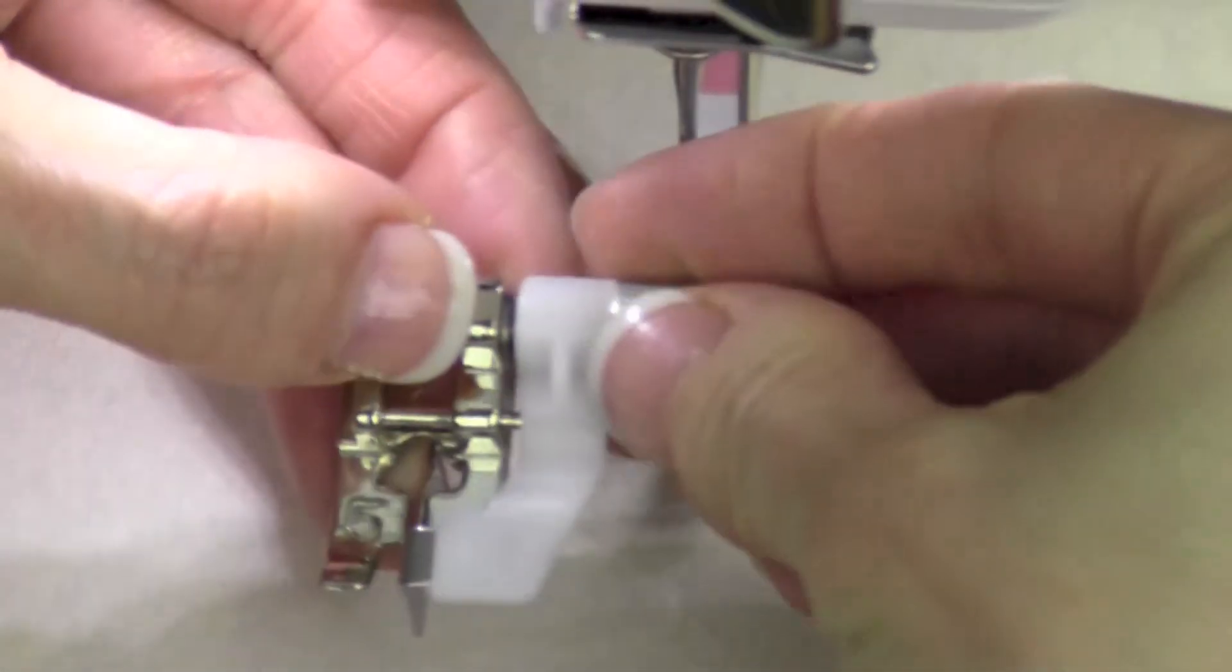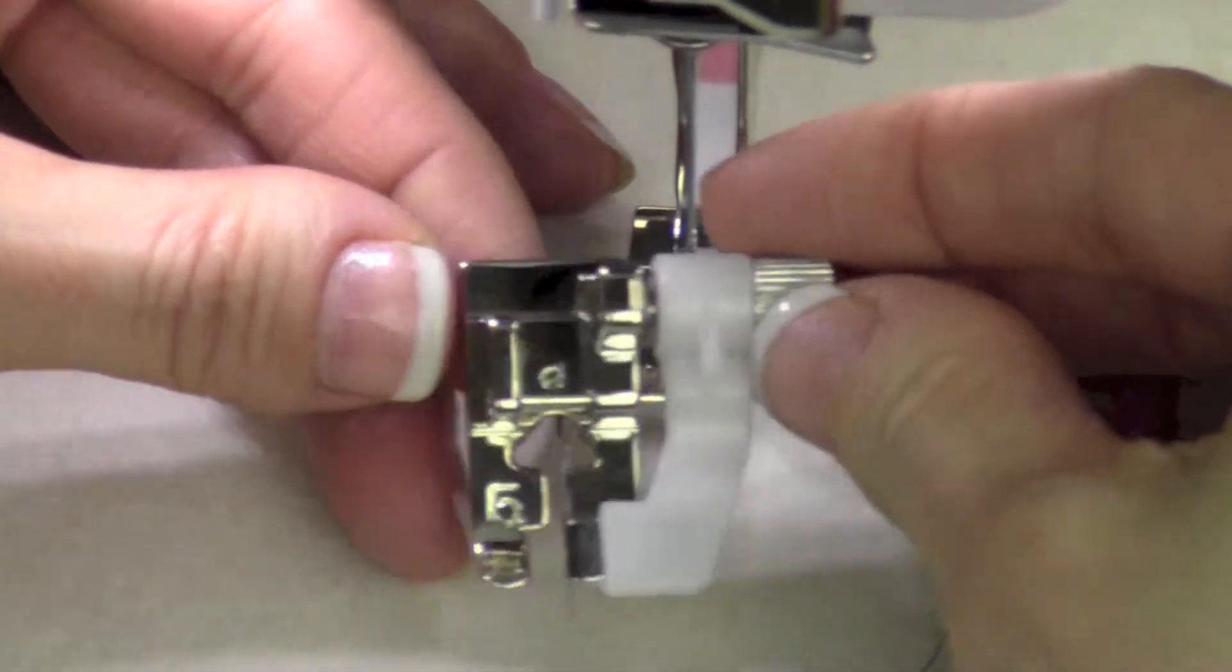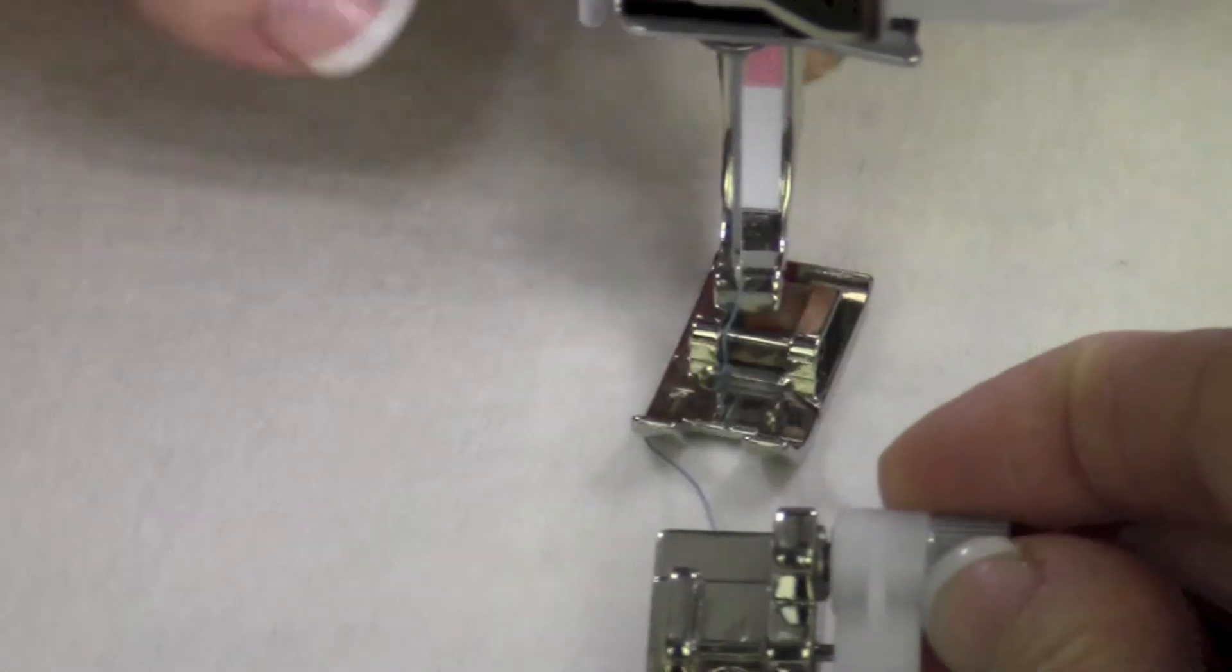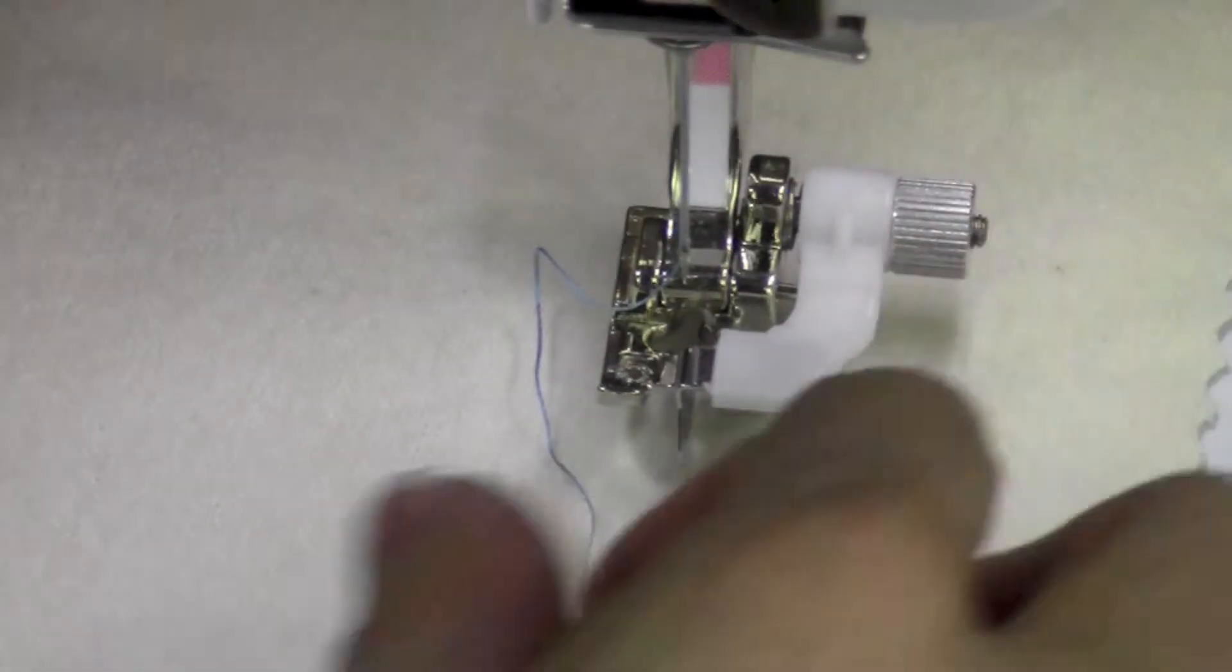That is a foot that has an adjustable guide which is great to help with different weights of fabric. Go ahead and take off your current foot, set the blind hem foot underneath and let it snap into place.